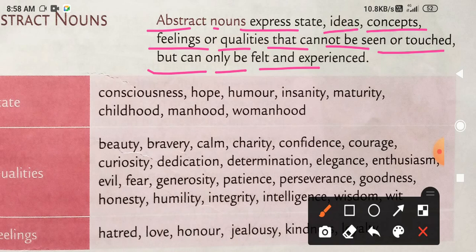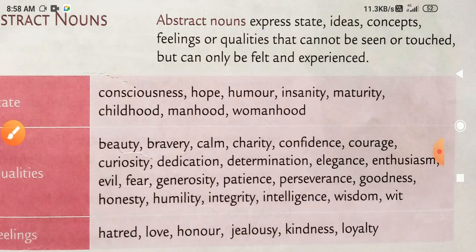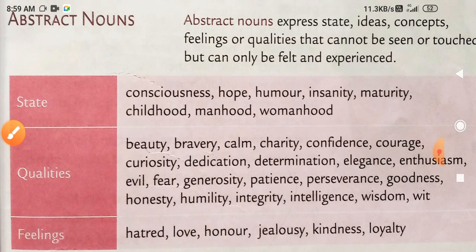Abstract noun expresses state, ideas, concepts, feelings or qualities — व्यक्त करता है — that cannot be seen or touched, उसको हम छूँ और देख नहीं सकते हैं. What can only be felt, यानि की अनुभव कर सकते हैं और उसका experience कर सकते हैं. It means mostly feelings को, concept को, ideas को, qualities को show करने के लिए होता है.